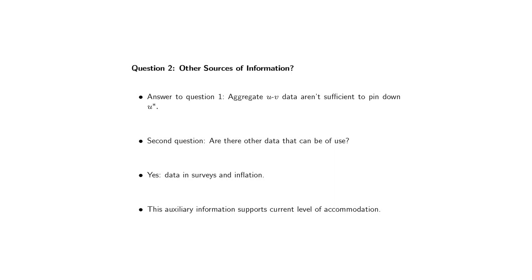So that's troubling. As a monetary policymaker, we want information about the natural rate of unemployment to judge what level of accommodation is appropriate. The second question is what other data can we turn to? Fortunately, there are other very useful data. Survey data — both formal and informal — of businesses, and perhaps even more importantly, data on inflation itself, are very informative about where we stand in terms of the gap between unemployment and the natural rate. This auxiliary information does support the current level of monetary policy accommodation being used by the FOMC.